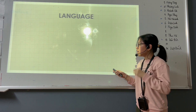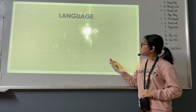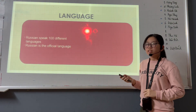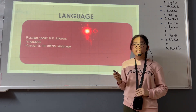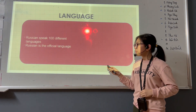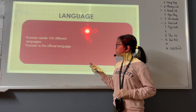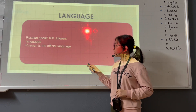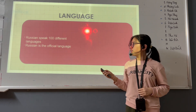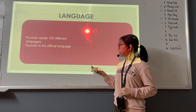Next, I would like to talk about the language. 160 ethnic groups of Russia speak 100 different languages, and Russian is the official language.